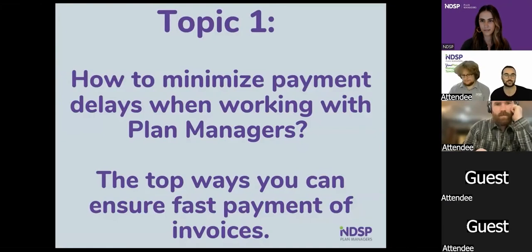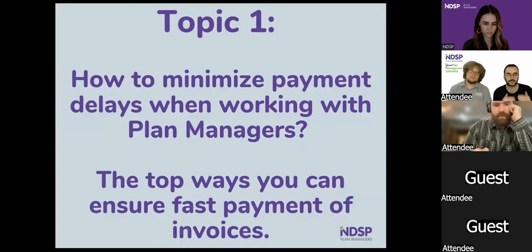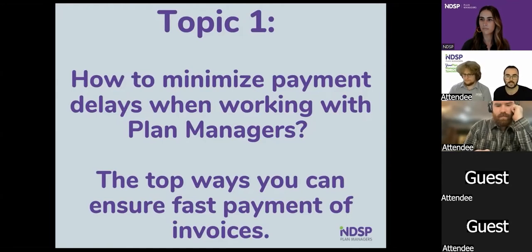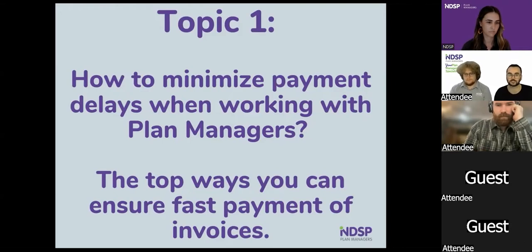When you grabbed your tickets, there was an option to add extra questions. We've consolidated them to answer the best we can. One question was about whether there's a specific format a plan manager would like to see invoices in and what needs to be included to ensure fast payment with no delays. There are minimum NDIA requirements on invoices. We need the client's first and last name. The NDIS number is also required if applicable, though we understand some providers don't have access to it — it's a confidentiality thing. As long as the first and surname are clearly on there so we can see who it's for, that's fine.